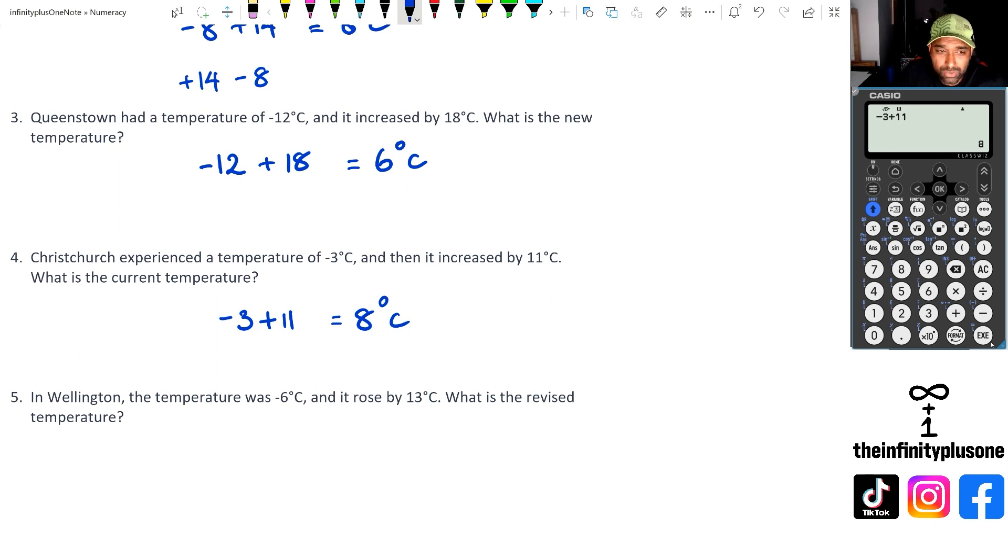And of course, the last question in Wellington, you've got negative six, and it's increasing by 13 degrees. So negative six plus 13. And that's equal to what is it 13 minus six. So we've got seven degrees.